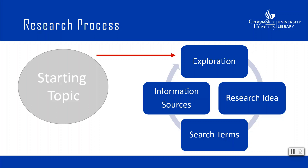The process starts with your initial topic. This often begins with something very broad, such as adoption or renewable energy. Once you have your starting point, you can begin to explore or brainstorm your topic and develop some initial ideas on what you would like to narrow it to. This will then lead to a more focused research idea and how you will frame your paper. To find information to support this idea, you will need to determine useful search terms.